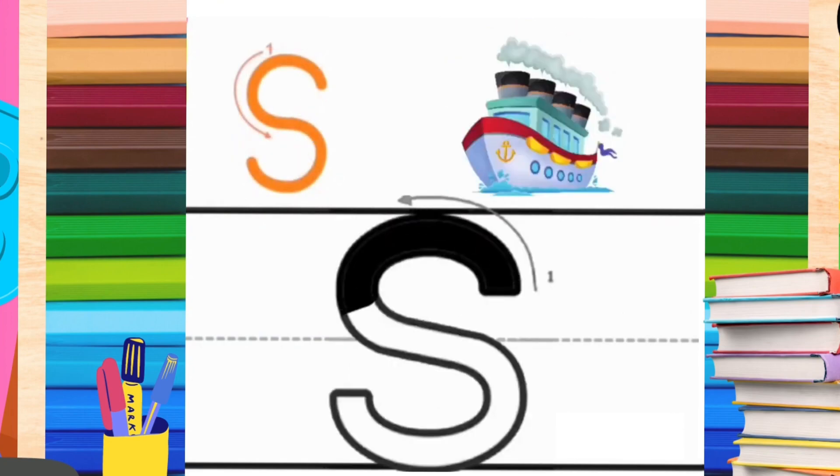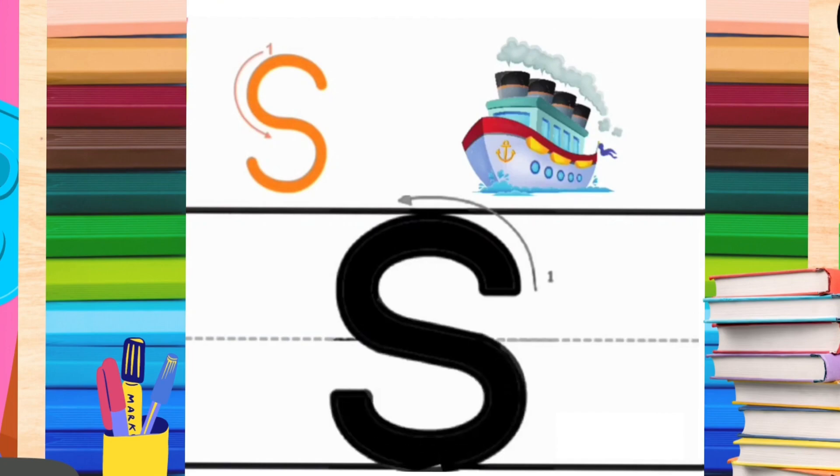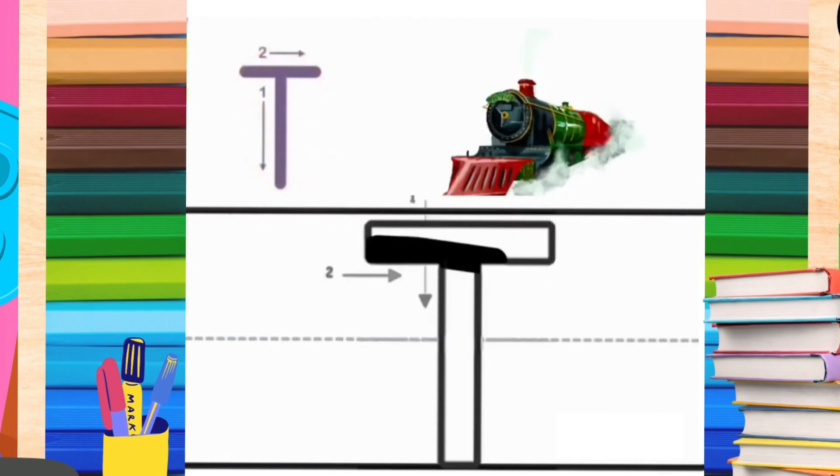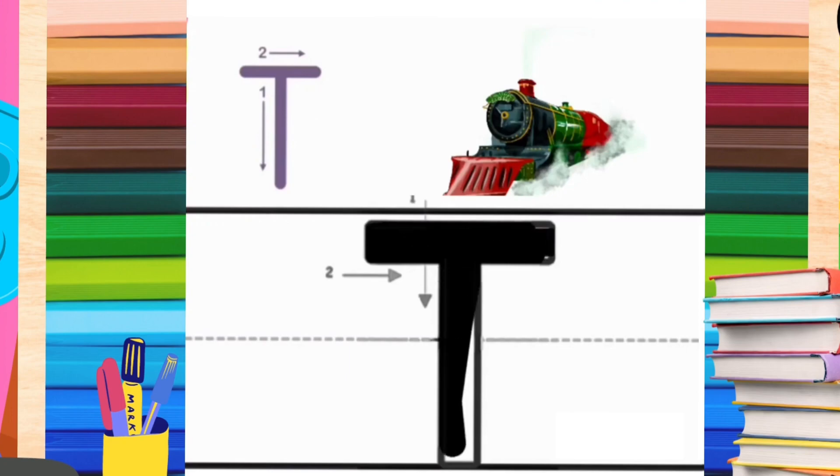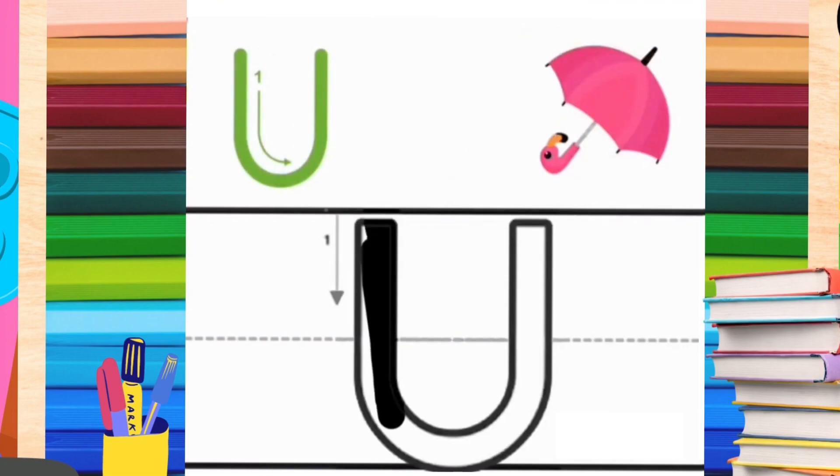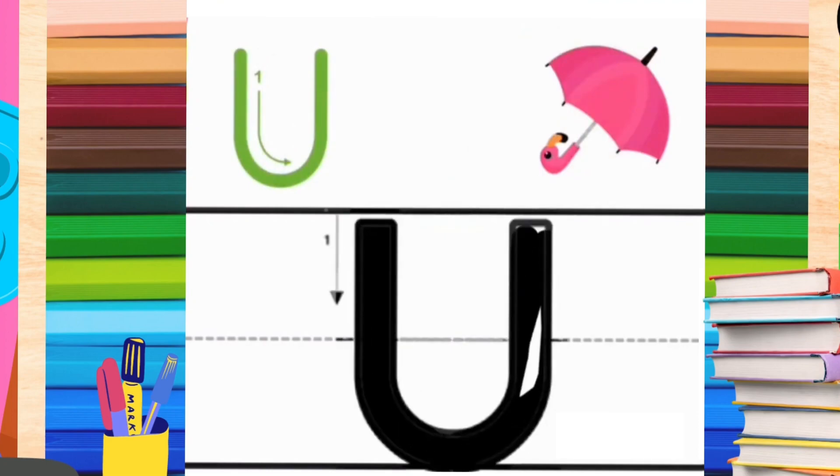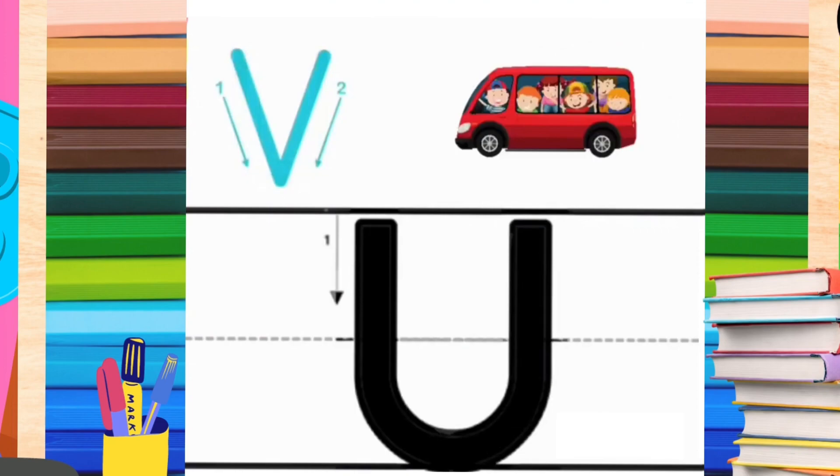S for Shape. T for Train. U for Umbrella.